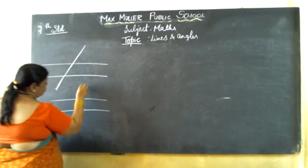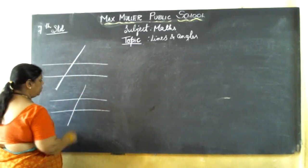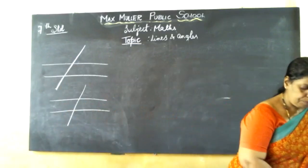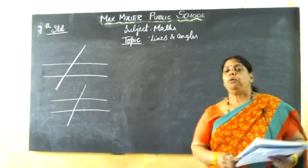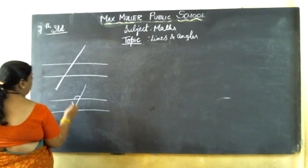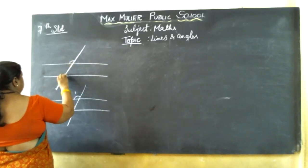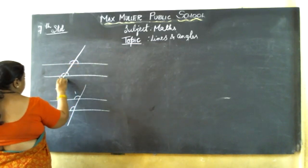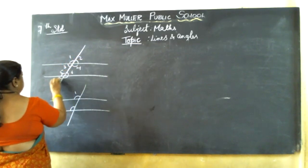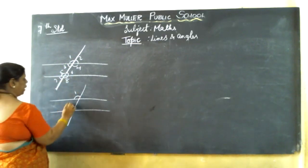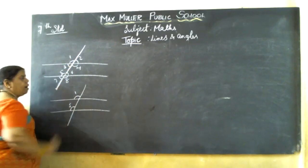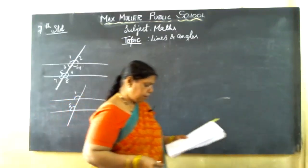First, we have learned about the corresponding angle. What is the corresponding angle? The angles which have different vertices. This is a corresponding angle. Angles 1, 2, 3, 4, 5, 6, 7, 8. So, angle 1 and angle 5 will be corresponding. In the same way, 2 and 6, 3 and 7, 4 and 8 are corresponding angles.